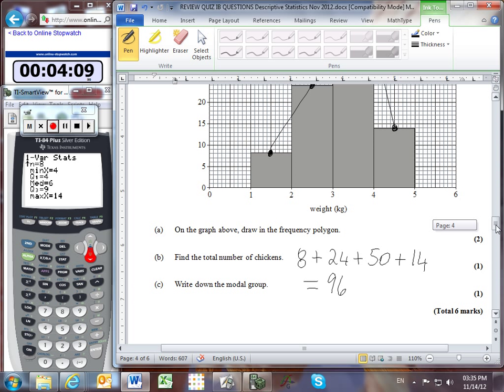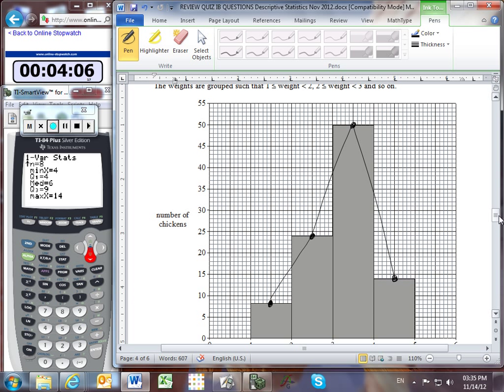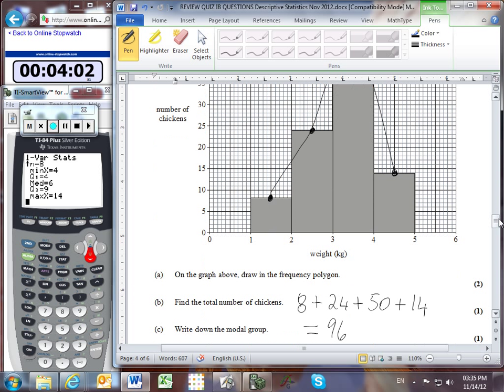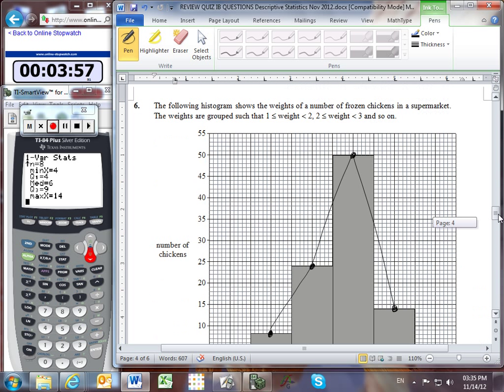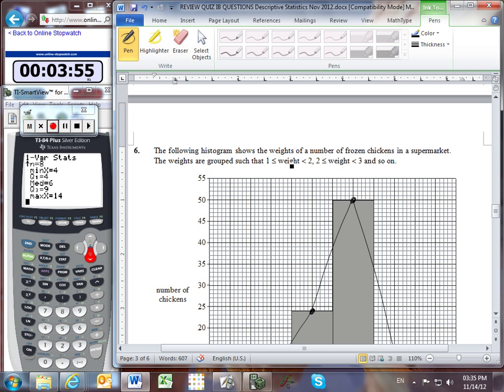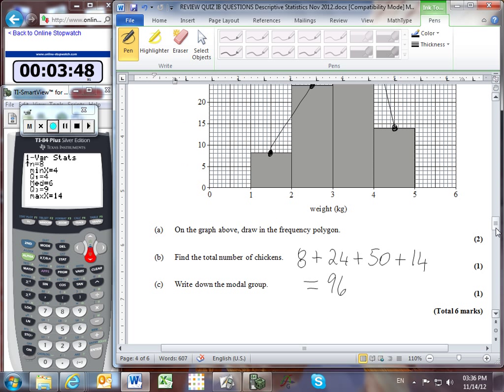Part C: writing down the modal group, which occurred most frequently. The highest bar reached 50, corresponding to weights between 3 and 4. Using their notation, the answer is weight greater than or equal to 3 but less than 4. Will finish the last two problems in the next video.